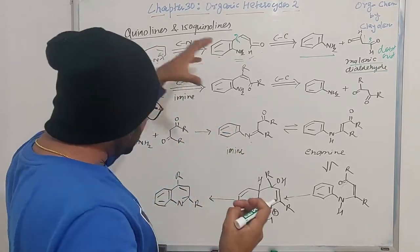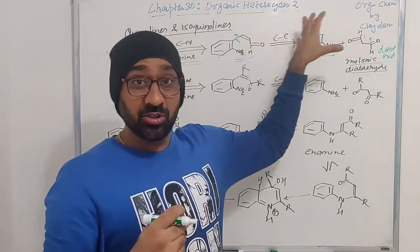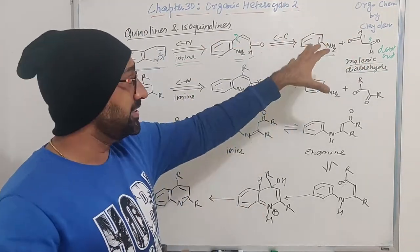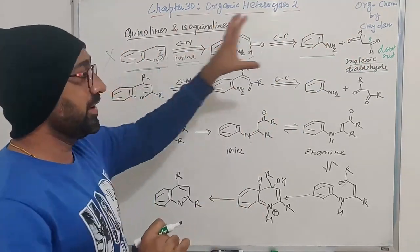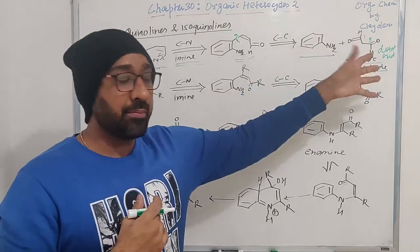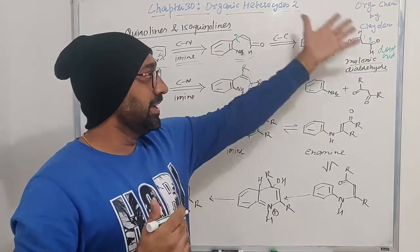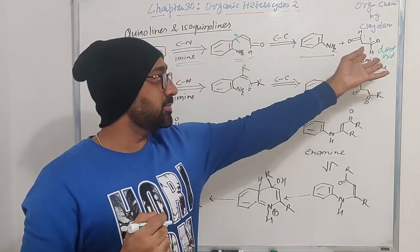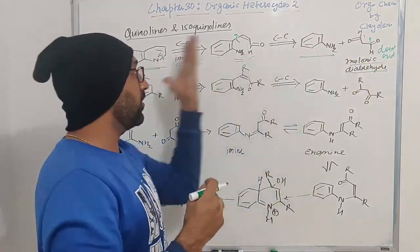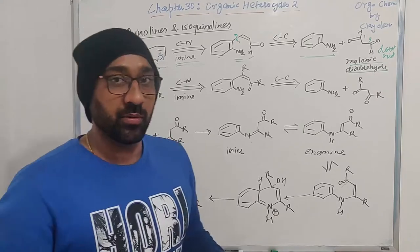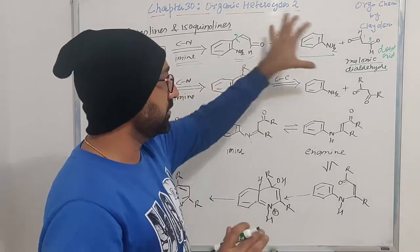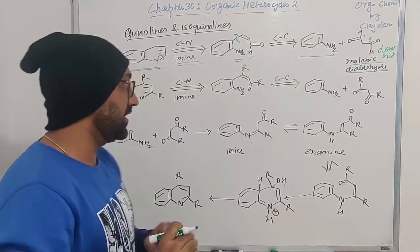So that is the reason why this particular strategy is not a good strategy. It looks good in terms of design, but it is not very reliable. If you cannot make this particular compound, then how can you make the quinolines? So that is why this is not a good strategy.